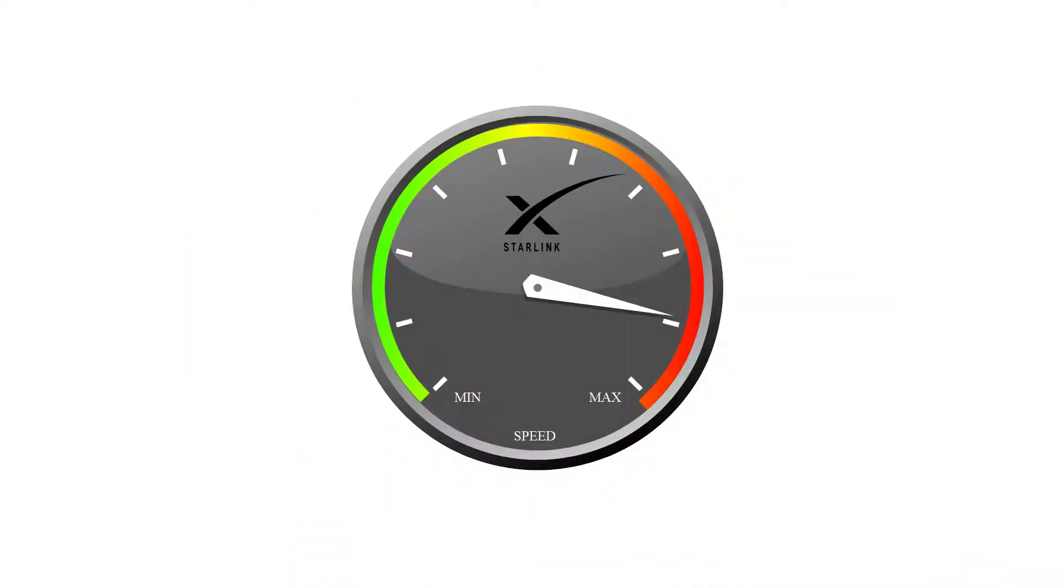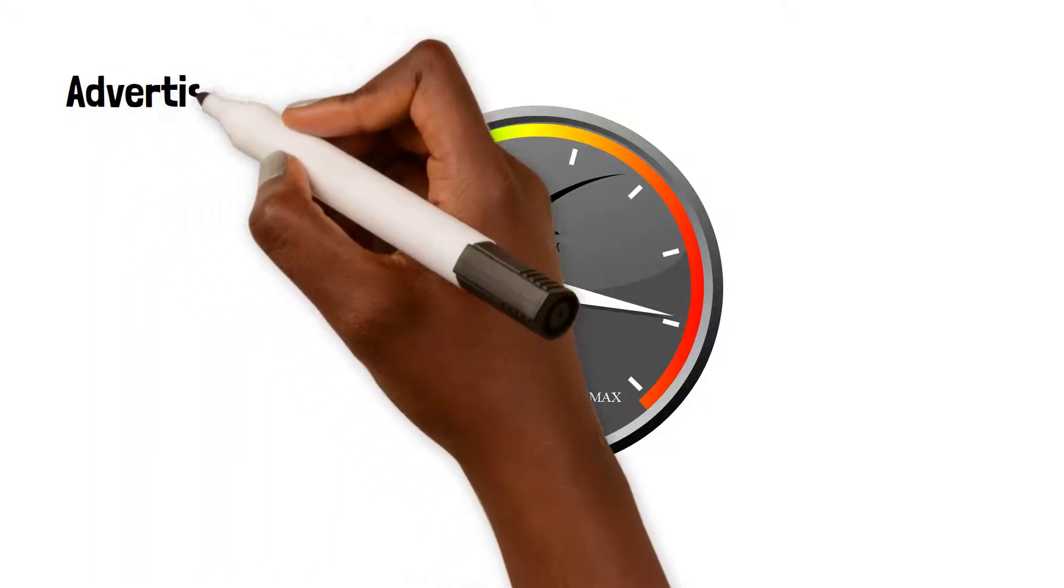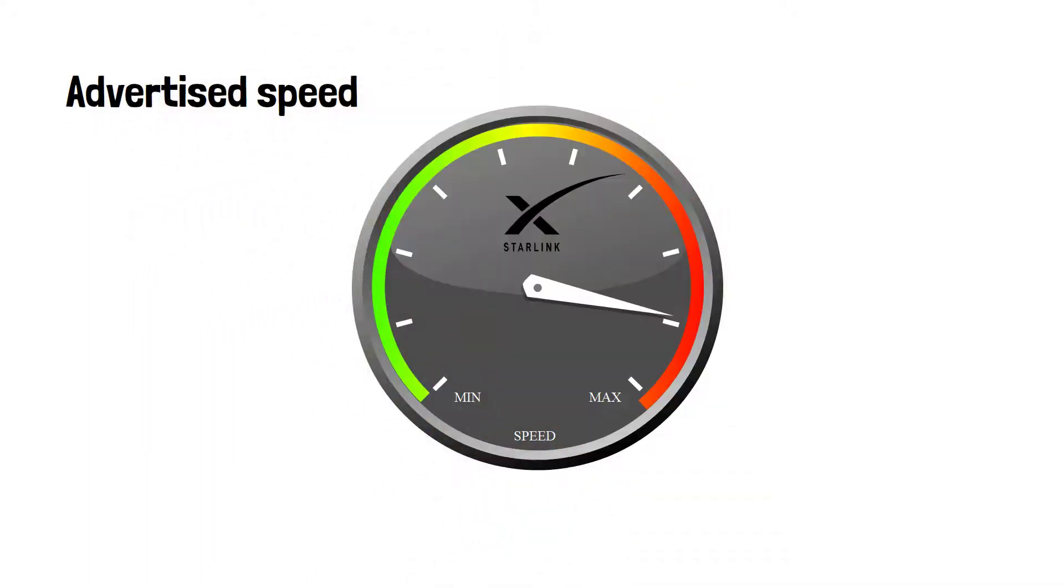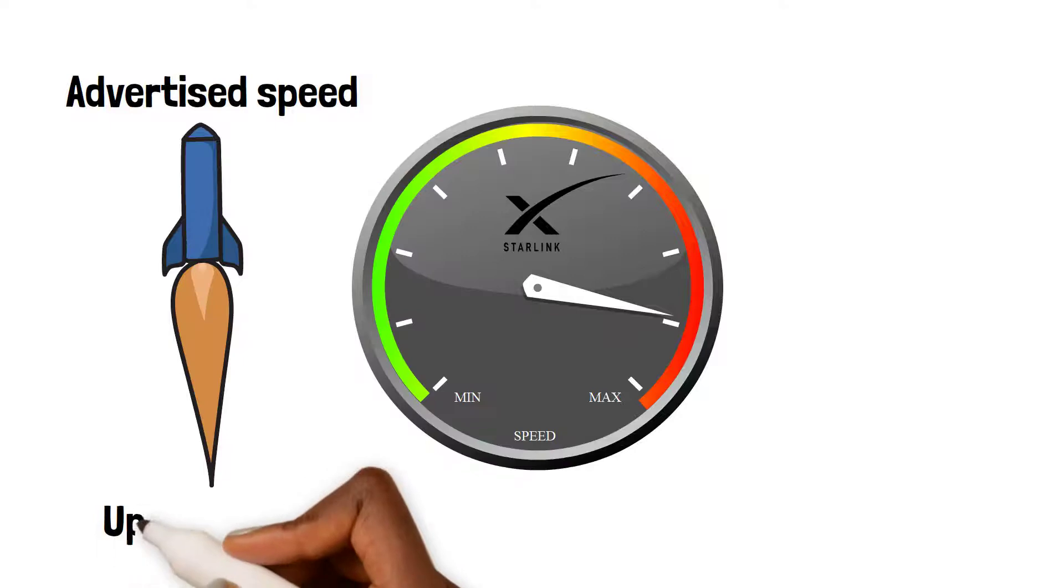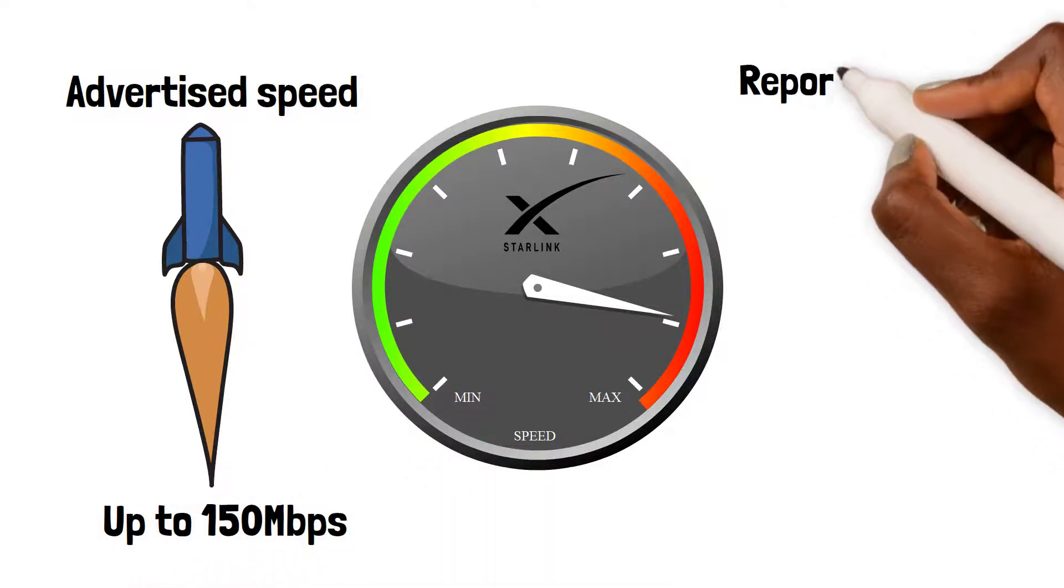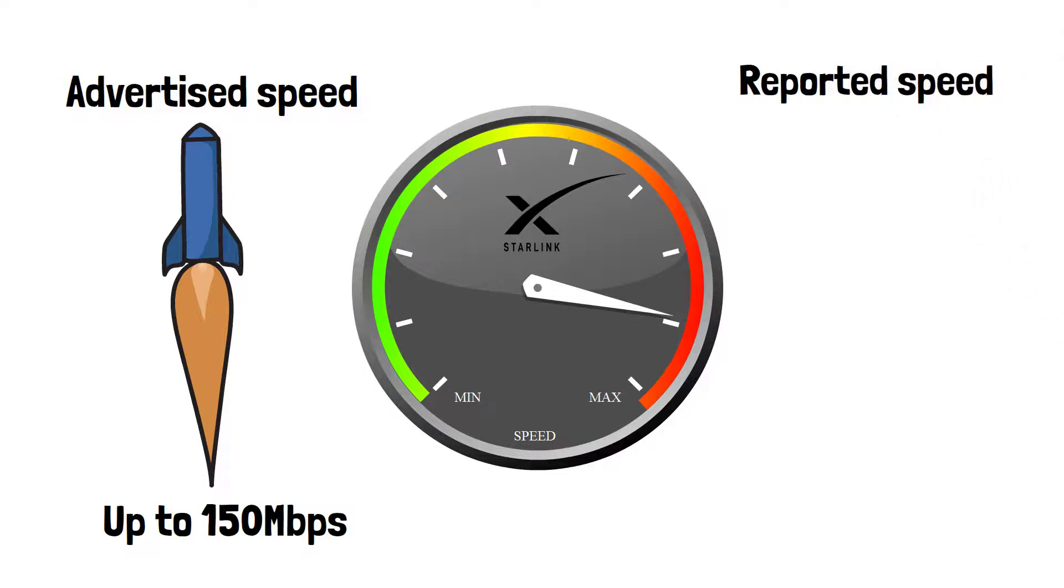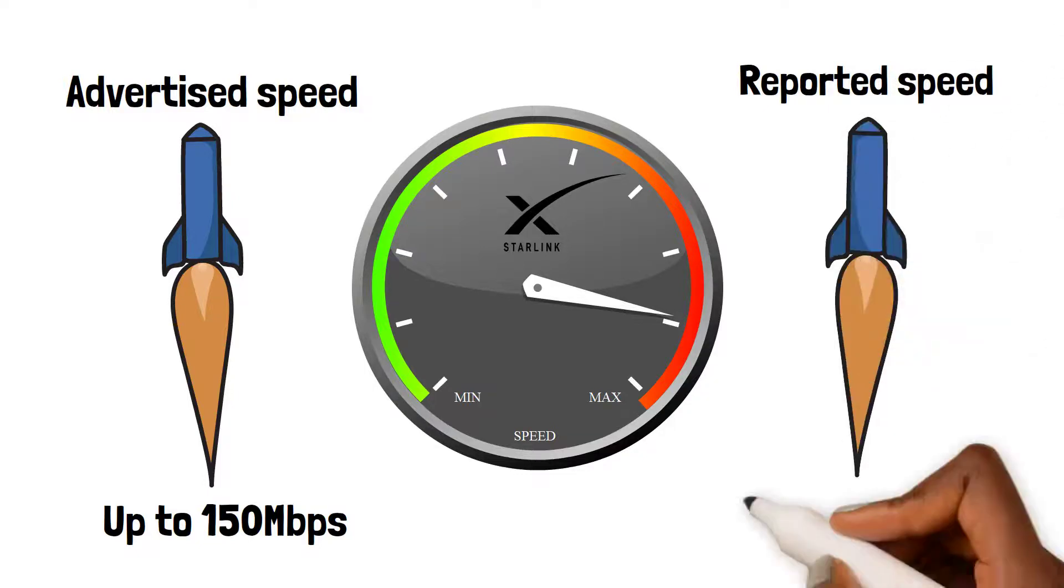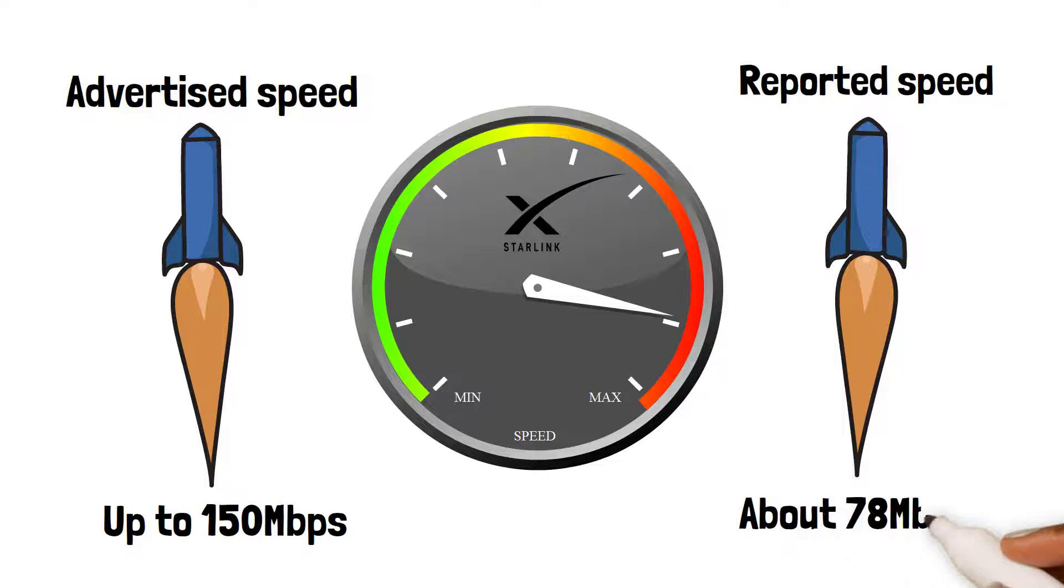Now that we've gone over the hype, here's the real. One: Starlink is fast. It has advertised speeds of 150 Mbps download, but there are reports that the number is actually closer to 78 Mbps. Either way, that's a massive improvement to the capacities that most Africans are able to have in their homes and offices.